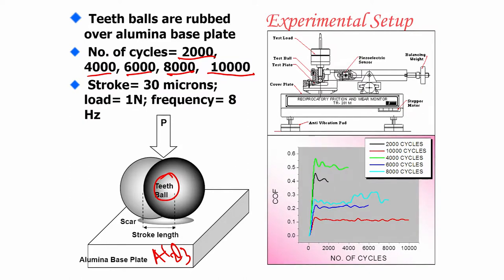We calculated that with a load of 1 Newton, considering the elastic modulus of the teeth and alumina, we are able to simulate the typical masticatory-action-related stresses at the contact zone. The frictional behavior as a function of cycles shows a very steady state value of around 0.1 over 10,000 cycles for the tooth versus alumina mating couple.